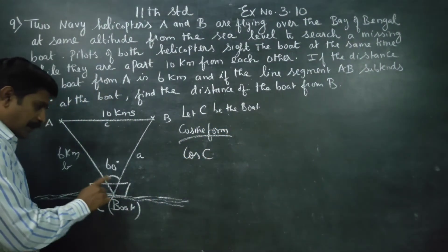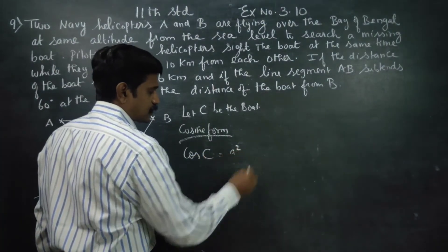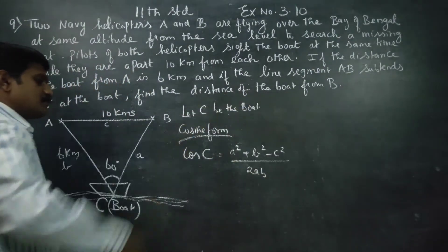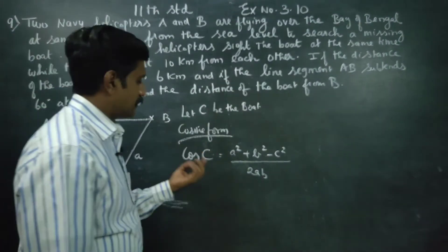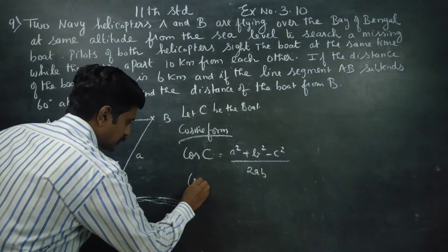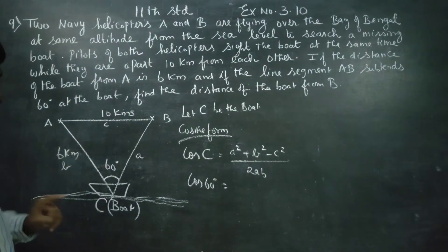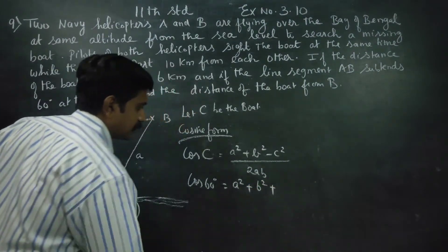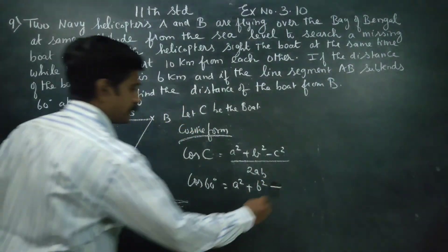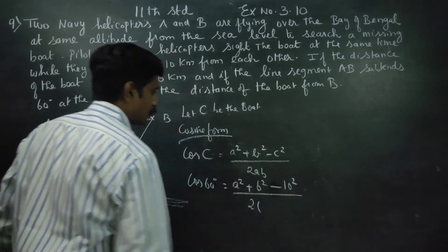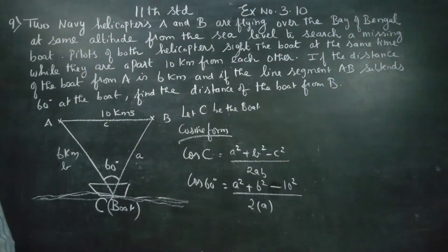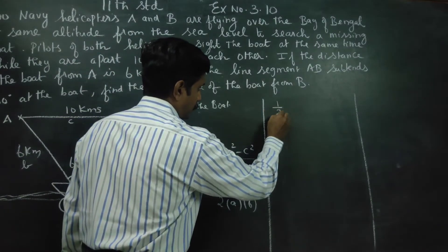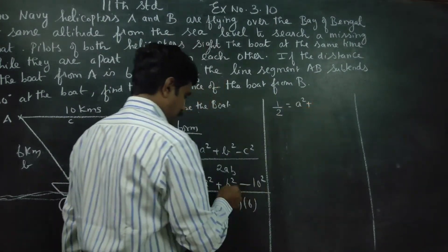Using angle C: cos C is equal to a squared plus b squared minus c squared, divided by 2ab. So 2ab cos C equals a squared plus b squared minus c squared. We use cos 60. Here a is unknown, b is 6, and c squared is 10 squared equals 100.